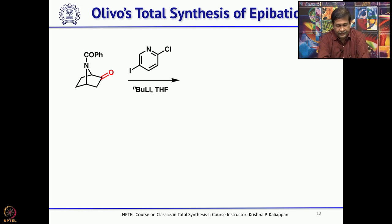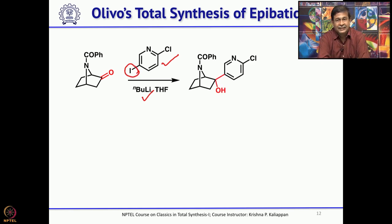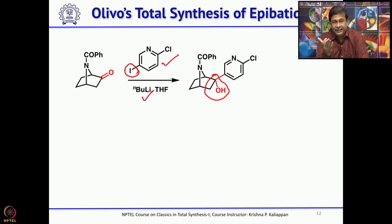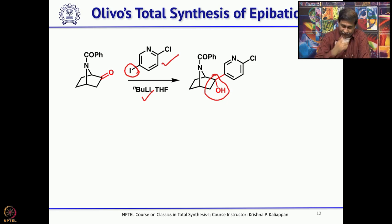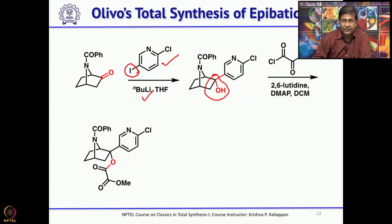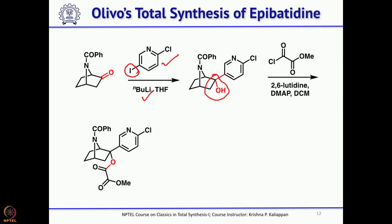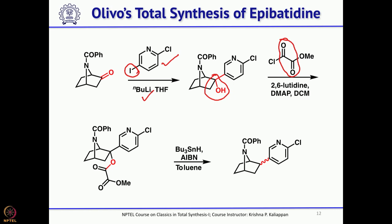Once the hydroxyl group was introduced, the next step was to add lithium chloropyridine. Simple oxidation with TPAP — tetra-n-propyl ammonium perruthenate — as catalyst and N-methylmorpholine N-oxide as co-oxidant gave the ketone. Then iodochloropyridine was treated with butyllithium to give the corresponding tertiary alcohol. Once you have this tertiary alcohol, there are two possibilities: dehydration followed by hydrogenation, or direct deoxygenation. Olivo opted for deoxygenation via the oxalic acid ester, and tributyltin hydride-mediated deoxygenation worked very well.